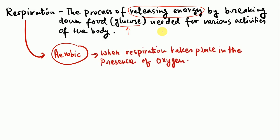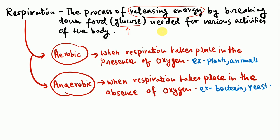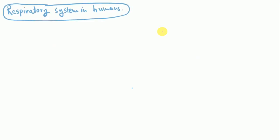Respiration can be of two types. One is aerobic, which is the respiration that takes place in the presence of oxygen. Another is anaerobic, which is the respiration that takes place in the absence of oxygen. Aerobic respiration occurs in plants and animals, while anaerobic respiration occurs in certain bacteria, yeast, etc.